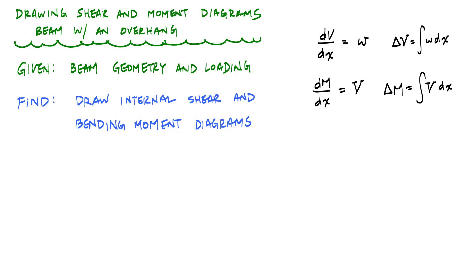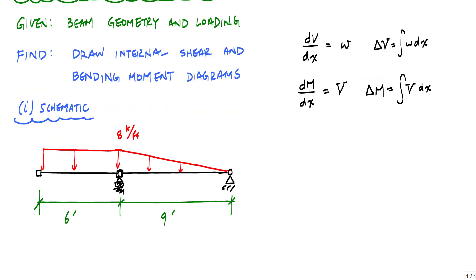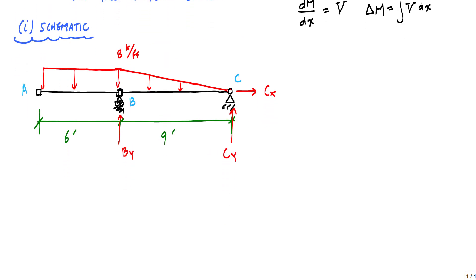Here is what the beam structure looks like. So here's my beam with an overhang. It's got a uniformly distributed load for that first six feet and then it's linearly distributed, decreasing down to zero for that last nine feet. One of the first things we're going to want to do is determine the support reactions by applying equilibrium equations. I'll have a vertical reaction BY, vertical CY, and a horizontal CX.